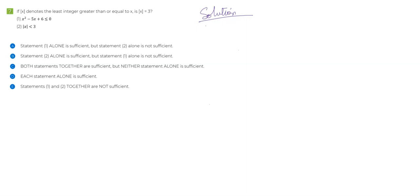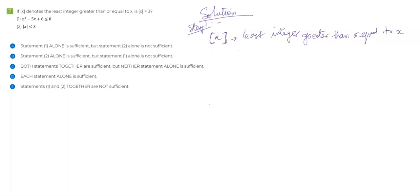So let's get started. Let's read the question first. It's given that there's a function called box of x — this is usually written as box of x or bracket x. This box of x denotes the least integer. So we'll focus on each and every word slowly and steadily. Least integer — I'm looking for an integer that is smallest, and it should be greater than or equal to x. Now it might be difficult to understand in terms of just a variable, so it is always best to take some values and try to understand the definition easily.